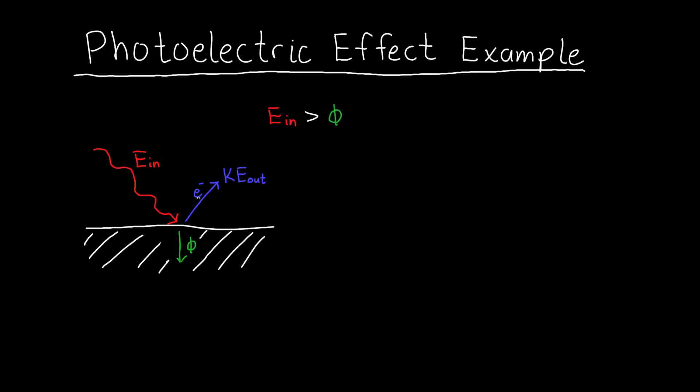then some of the electrons in that material are going to get freed, and their output energy or their kinetic energy that those electrons leave with is equal to the input energy minus the cost that we pay to get those electrons out, which is called the work function, φ.